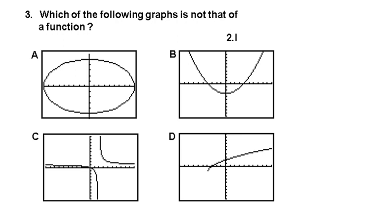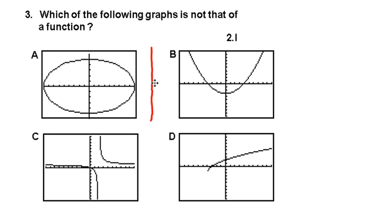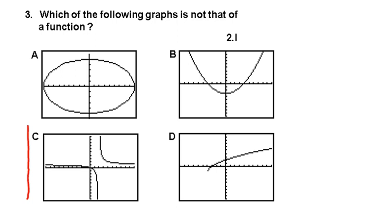Problem 3: Which of the following graphs is not that of a function? You may have learned about the vertical line test. Graph A fails the vertical line test, while B, C, and D all pass it. Therefore A is our correct answer.